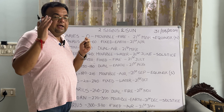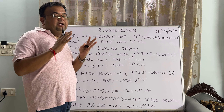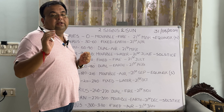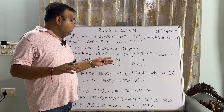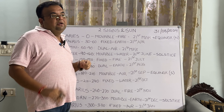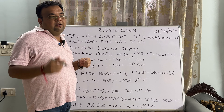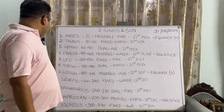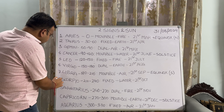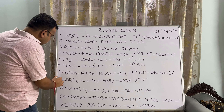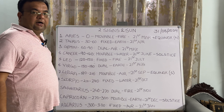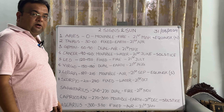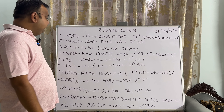Libra represents another equinox state, wherein the length of the day is exactly equal to the length of the night. On the 21st of September, the sun is crossing the equator towards the southern hemisphere. The eighth sign is Scorpio. It extends from 210 degrees to 240 degrees, fixed, and the sun enters it on the 21st of October.